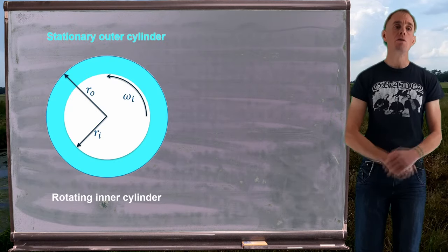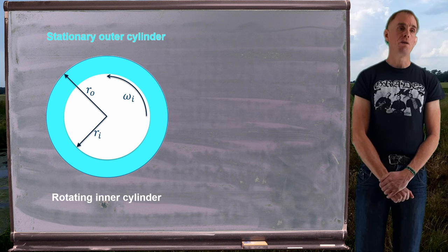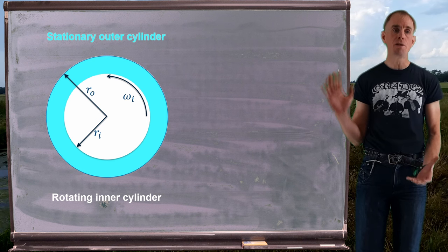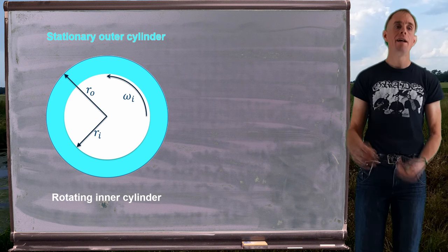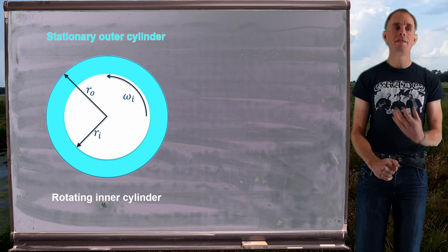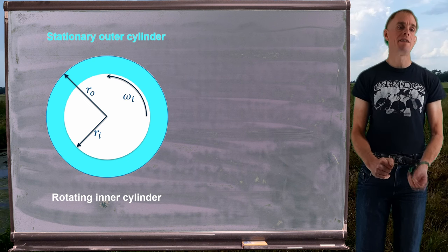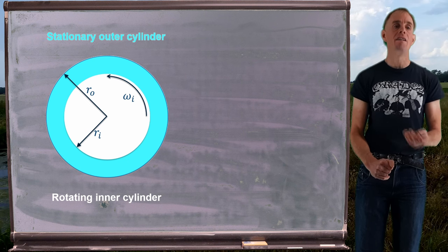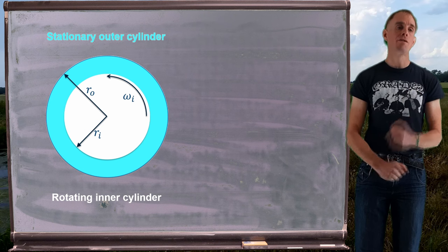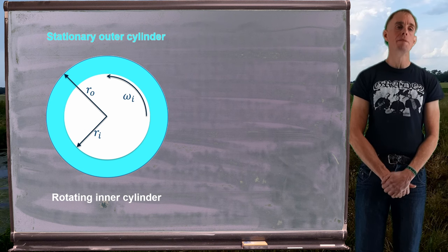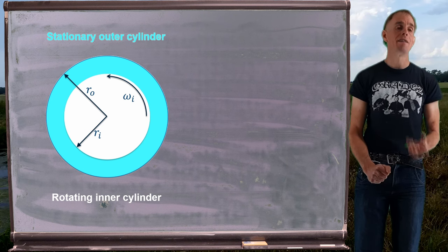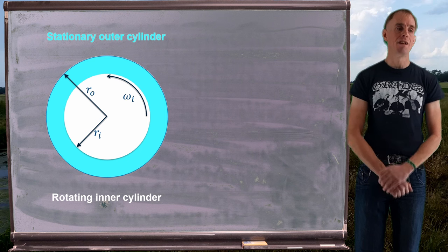Here is a plan view of my Couette cell. It has a stationary outer cylinder and a rotating inner cylinder. The inner cylinder has a radius of little r_i and an angular velocity of omega_i. The outer cylinder has a radius of little r_o.